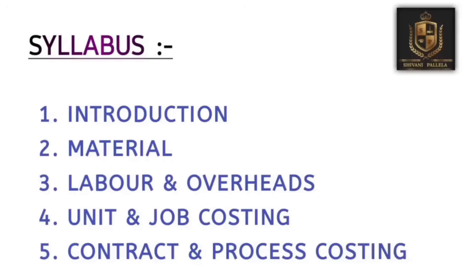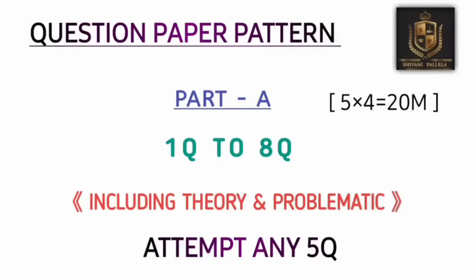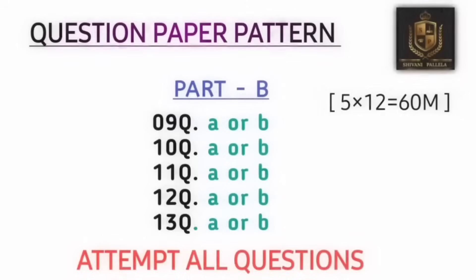First, let's understand the question paper pattern. In Part A, the total weightage is 20 marks — questions one to eight are given, and you need to attempt five questions. Each question carries four marks and includes theory as well as problems. In Part B, from question nine to thirteen, you need to attempt all five questions, each carrying 12 marks, with an internal choice in each question.